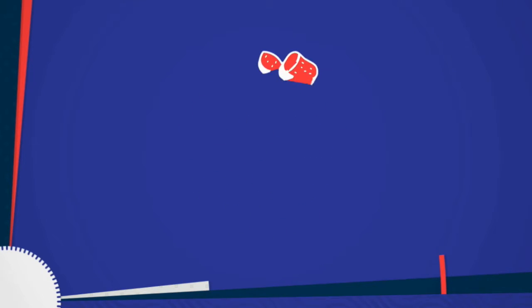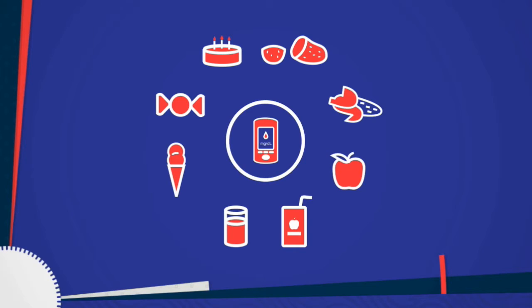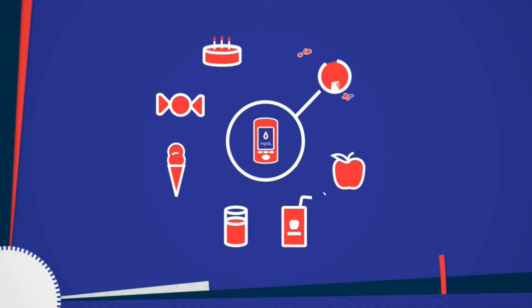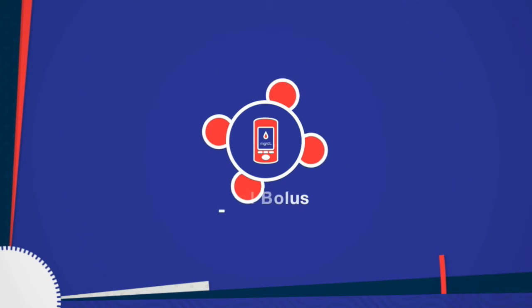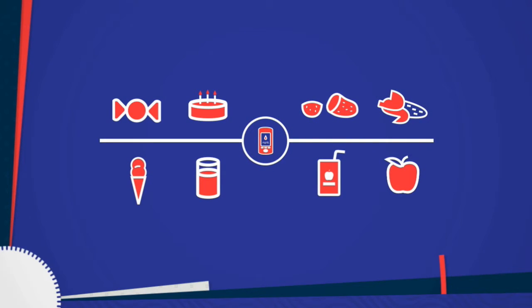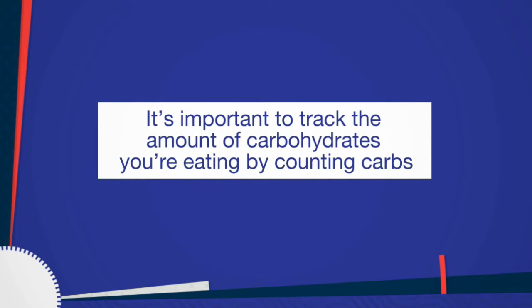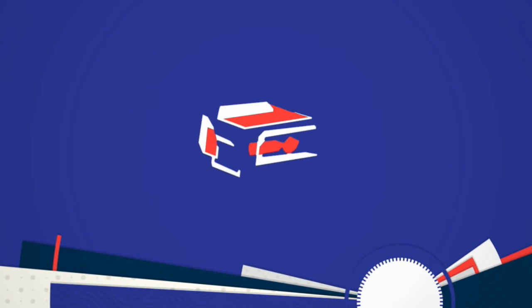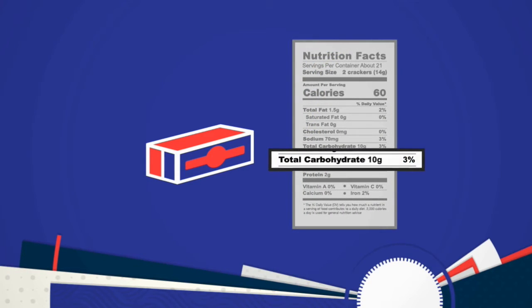For example, starches in some vegetables, fruit and fruit juice, milk and milk products, and sweets and desserts may affect your blood glucose. Throughout the day, you will need additional doses of insulin when you eat meals or snacks that are likely to raise your blood glucose. This insulin dose is called a meal bolus. The type of food you eat affects how much insulin you'll need to keep your blood glucose at an acceptable level. It's important to track the amount of carbohydrates you're eating by counting carbs. If eating packaged food, read the Nutrition Facts labels. These labels tell you how many grams of carbs are in a single serving of the food.